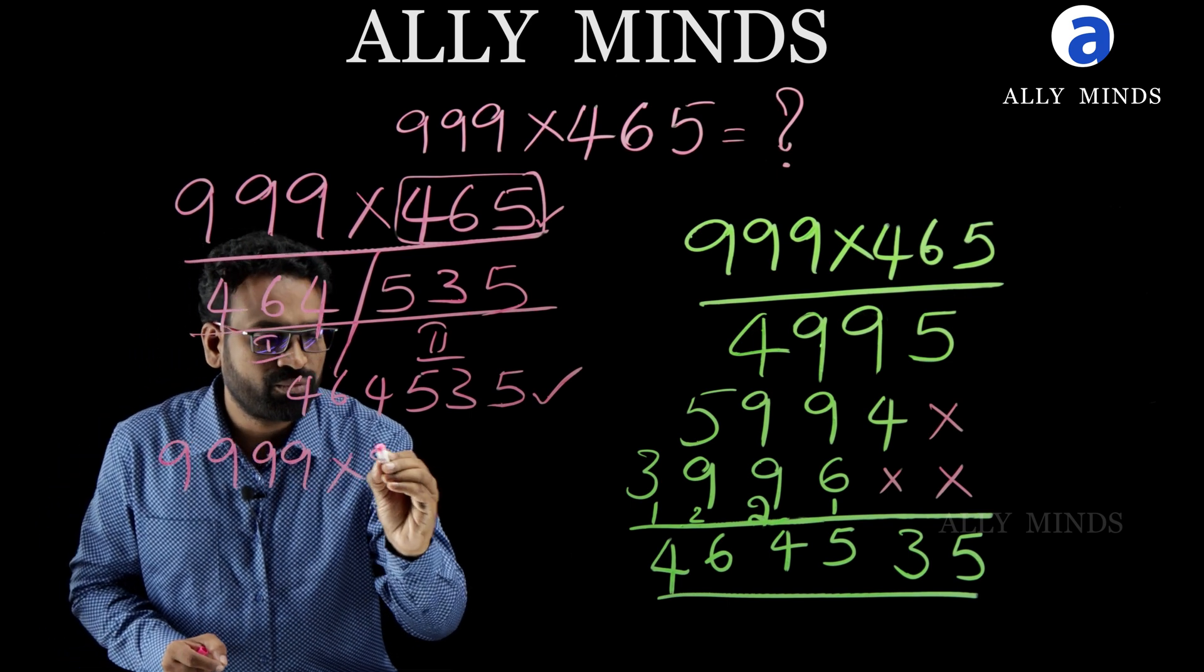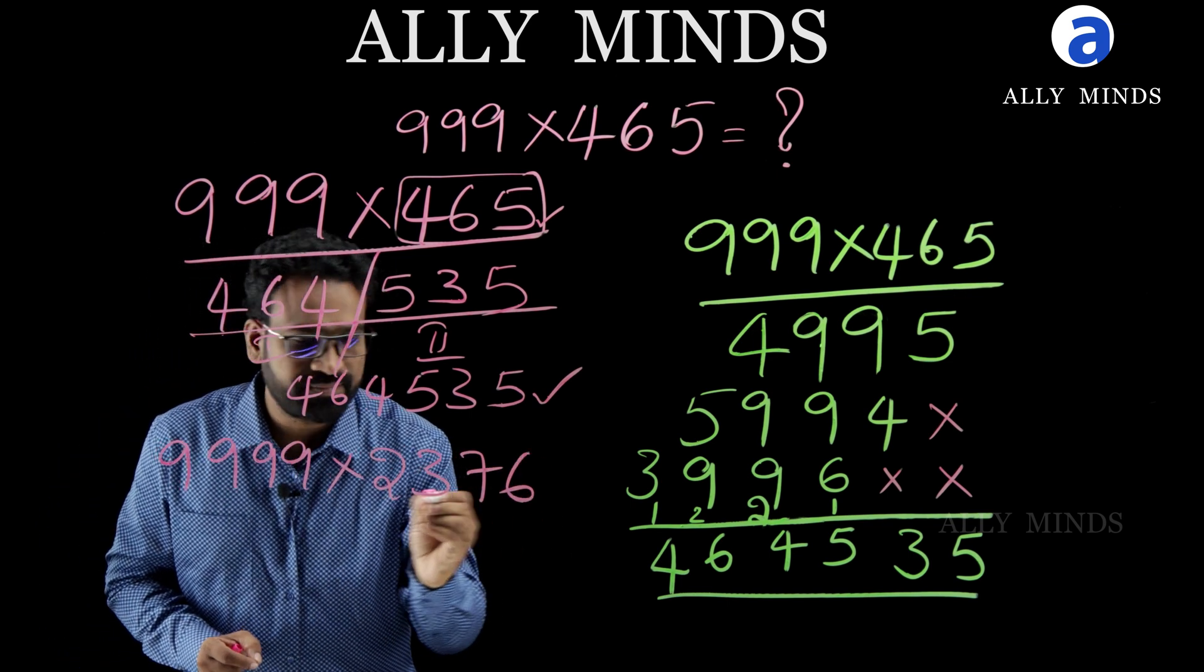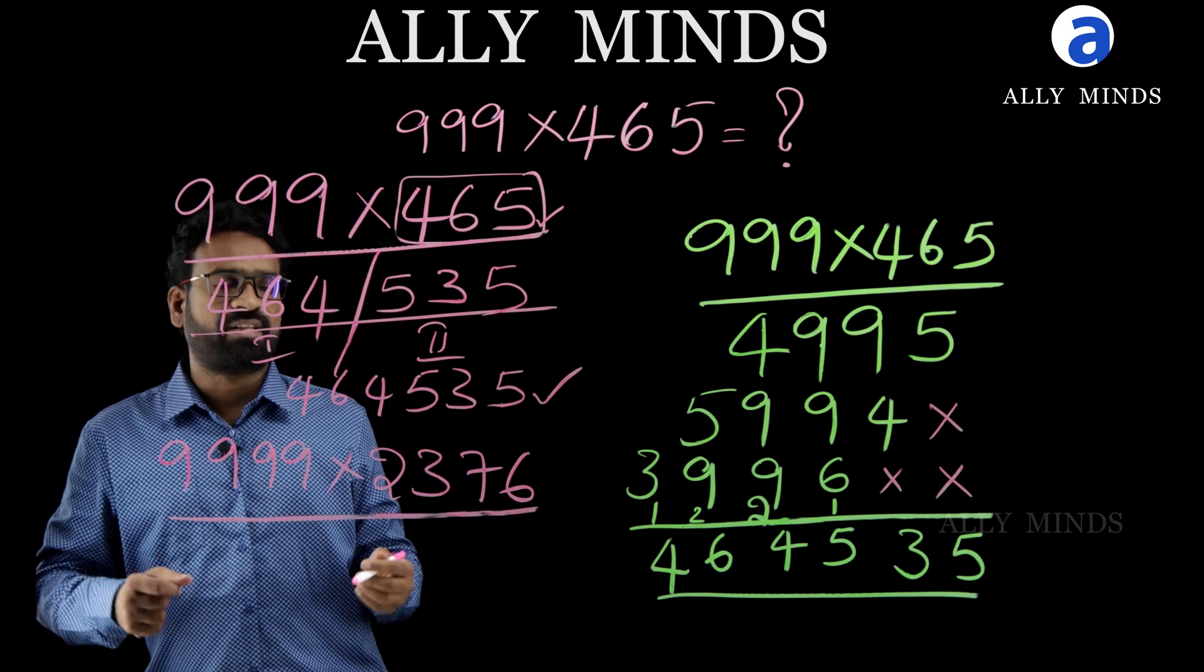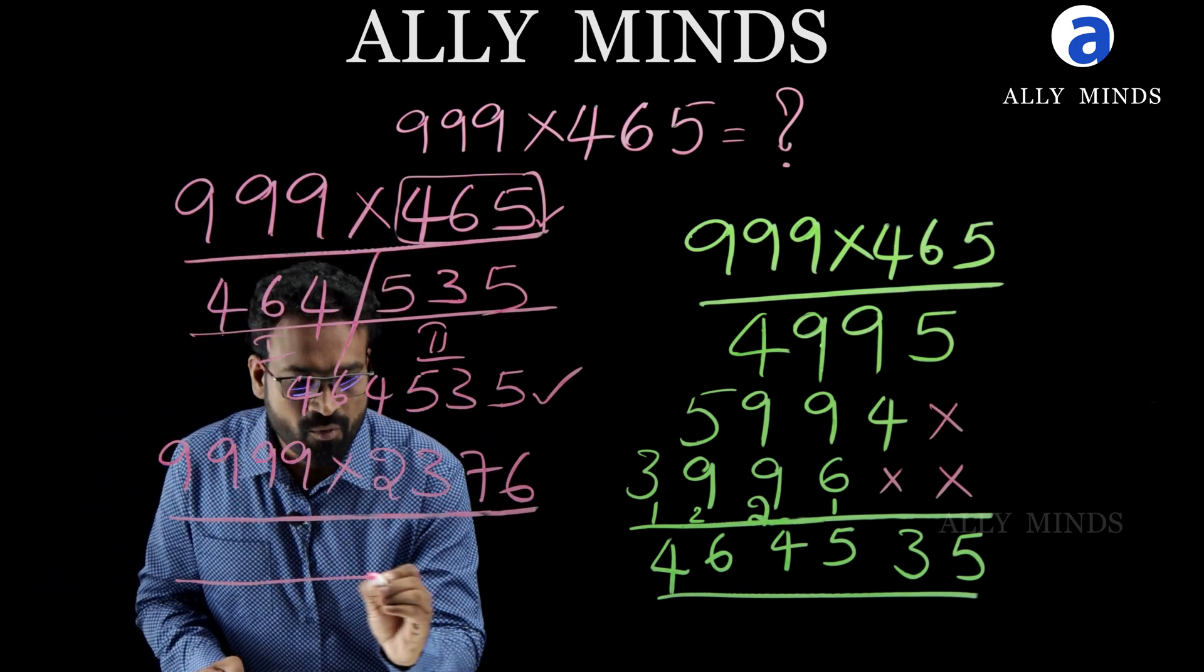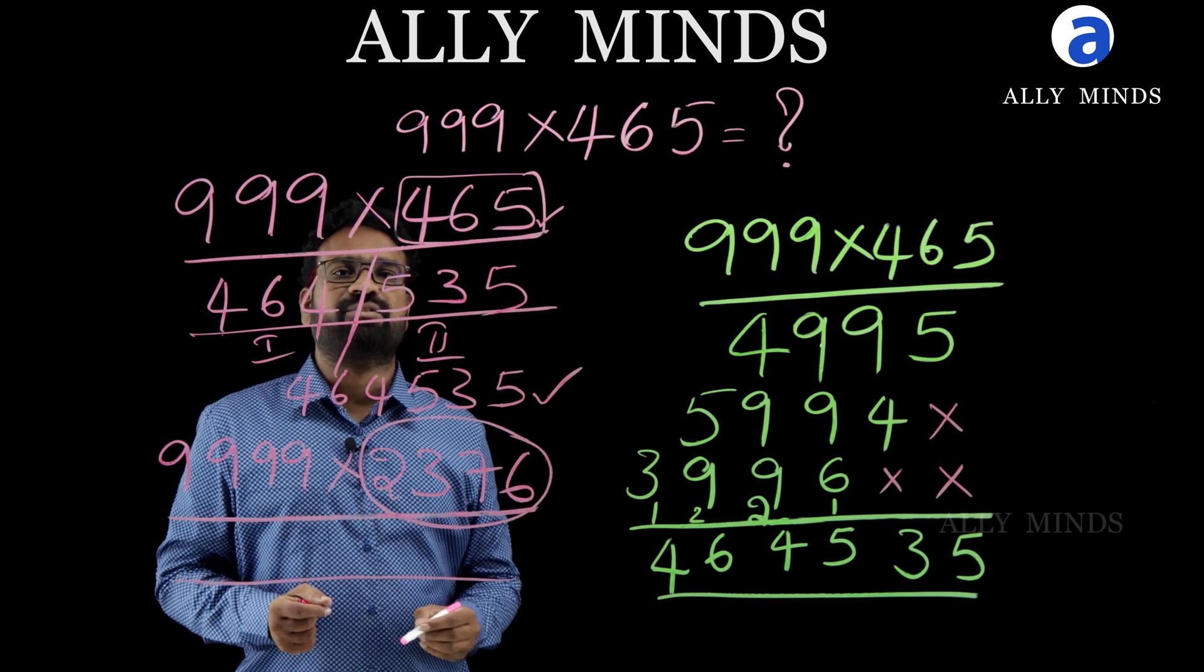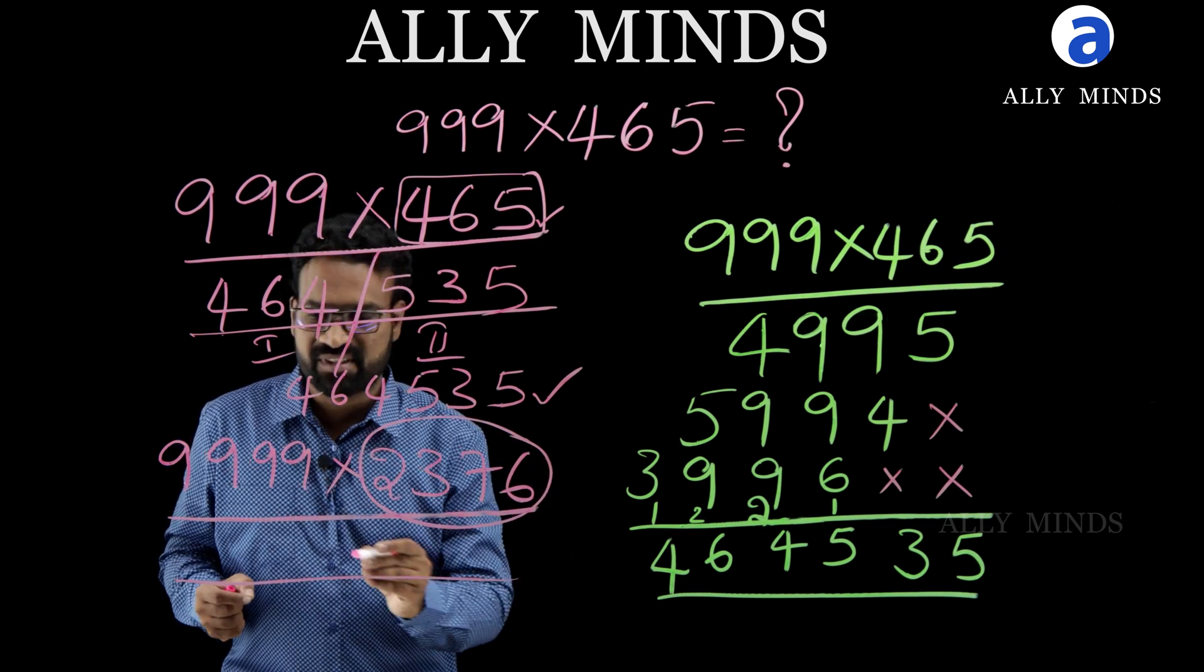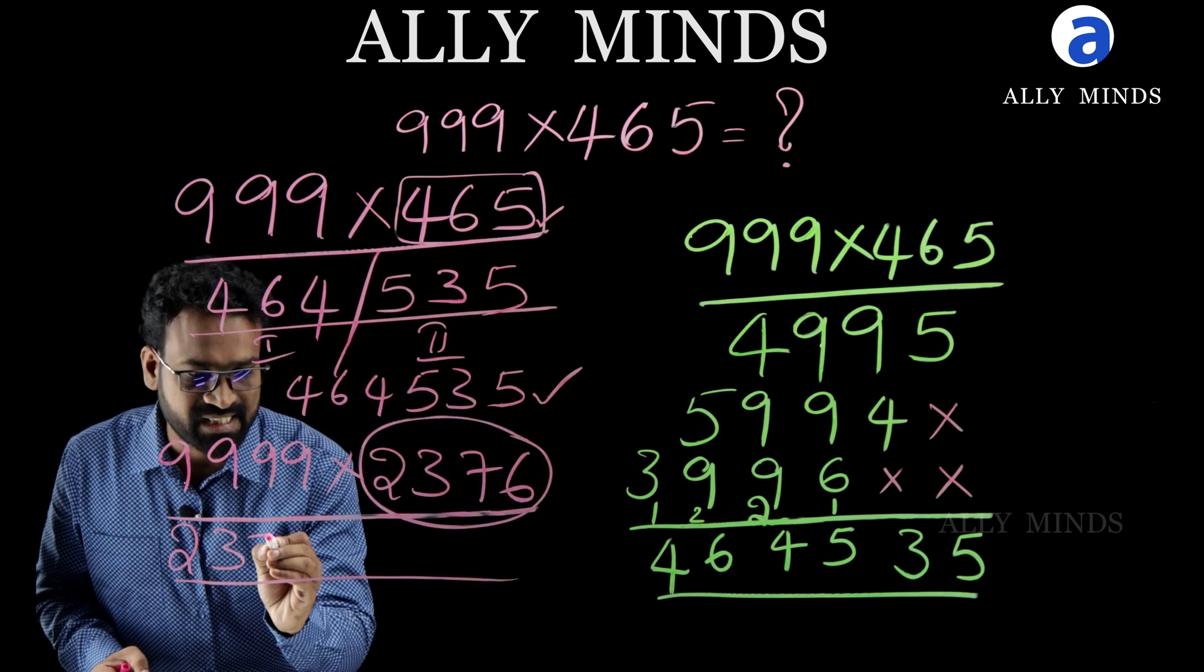Double nine, double nine into 2376. See here, for this, what we have to do is, we have to take one less than this number 2376. One less than this 2376 is 2375.